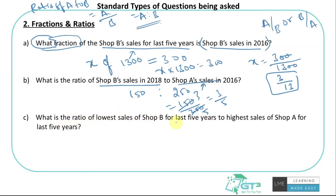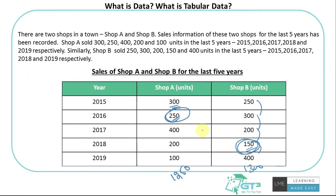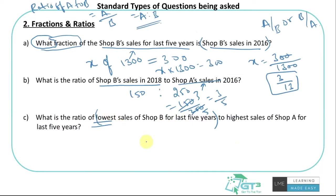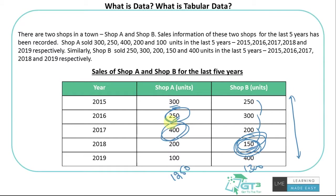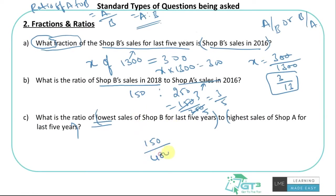'What is the ratio of lowest sales of Shop B for the last five years to the highest sales of Shop A for the last five years?' First find the lowest Shop B sales: 150. Then find the highest Shop A sales: 400. So the ratio is 150:400, which simplifies to 3:8. These question types ask you to identify minimum/maximum values and find the corresponding ratio.